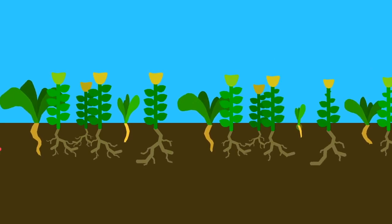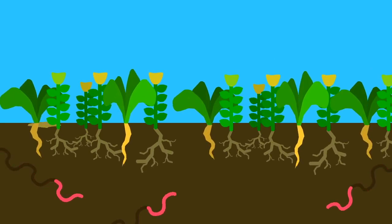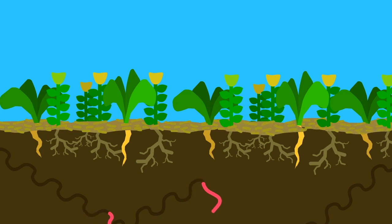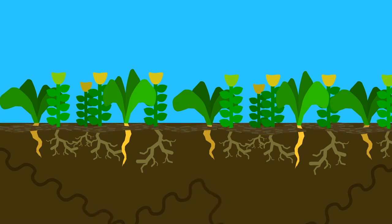Instead of tilling, plant cover crops whose roots break up the soil. Let the worms aerate the soil and bring down nutrients. Keep the soil covered with an organic mulch, which will break down over time, adding more organic matter to the soil.